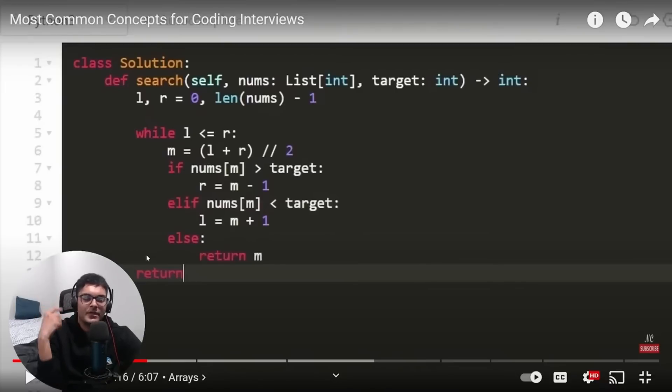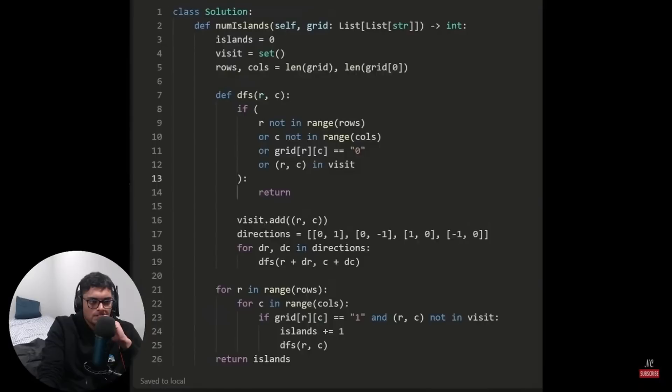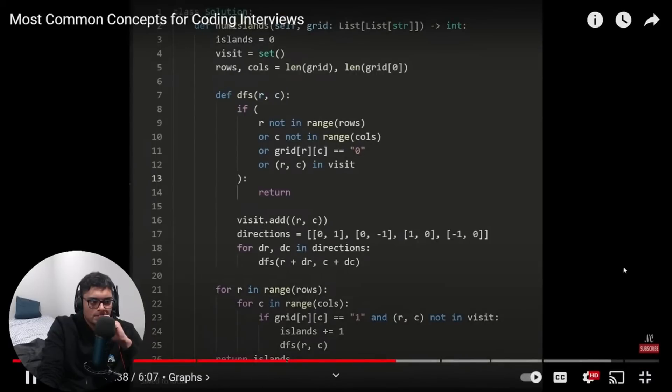Once you know how to solve a problem, the code just writes itself. And that's what you want to get to. You should be able to tell me what would go wrong if I removed any of these lines of code.